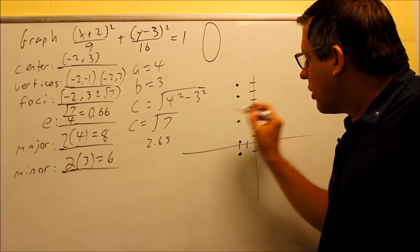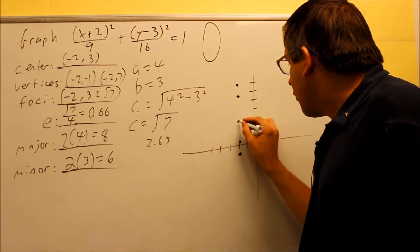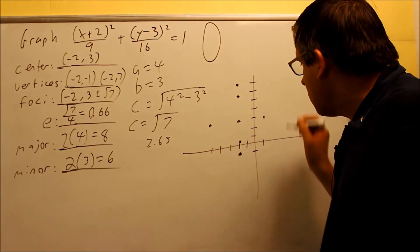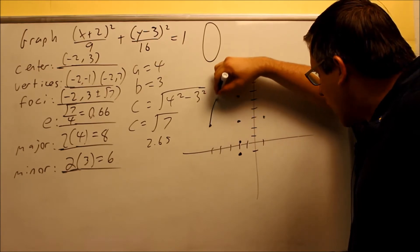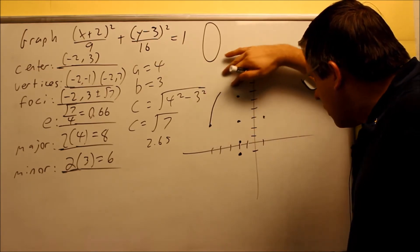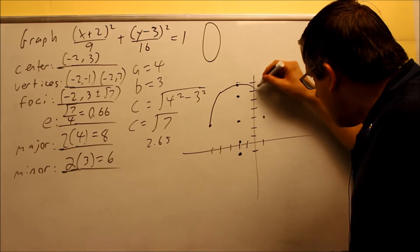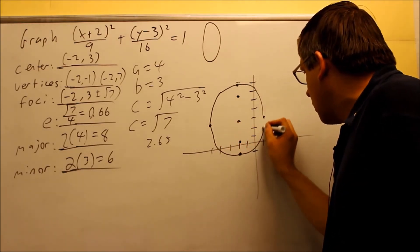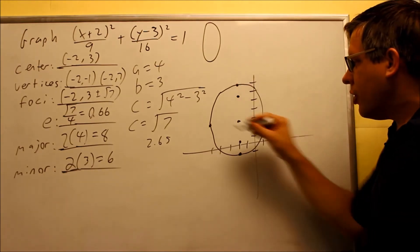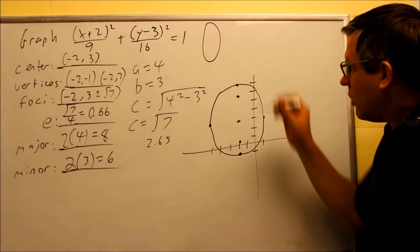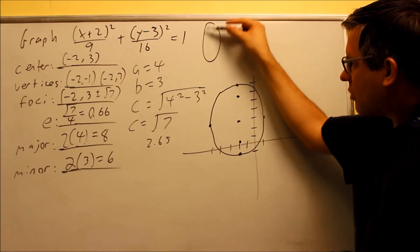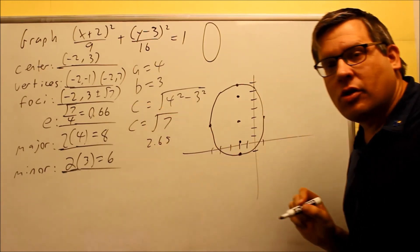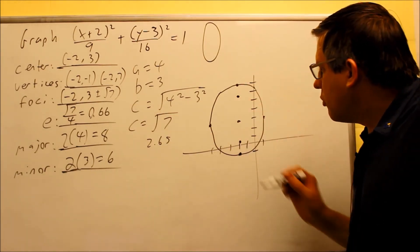We're not done yet — we still need the rest of the graph. b is 3, so from the center we go 3 to the left and 3 to the right to make dots. The final graph goes through all the vertices and the ellipse looks more rounded than previous examples — that's because the eccentricity is closer to zero, and the closer it is to zero, the more it resembles a circle.